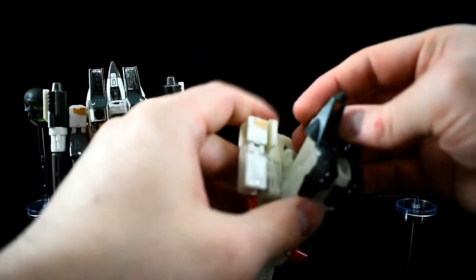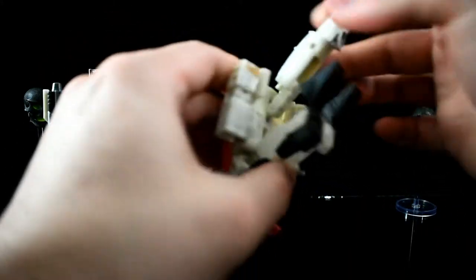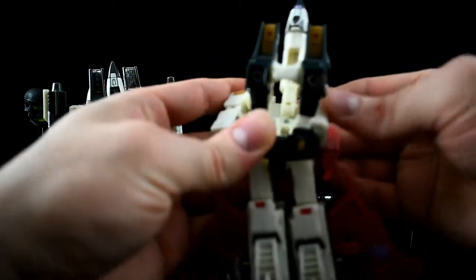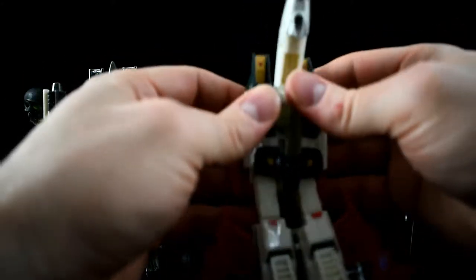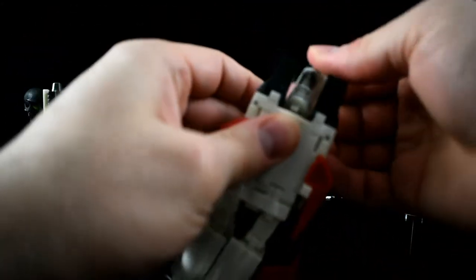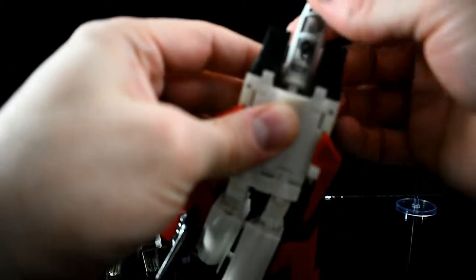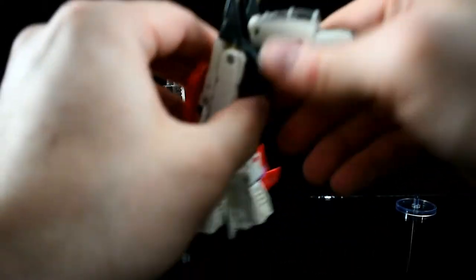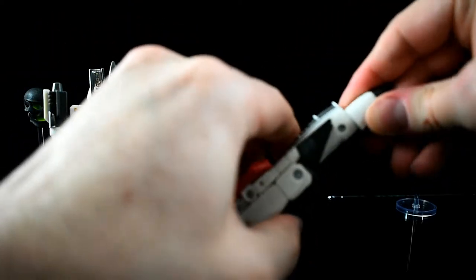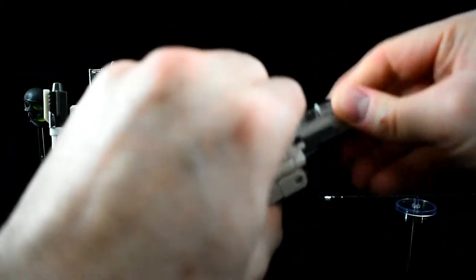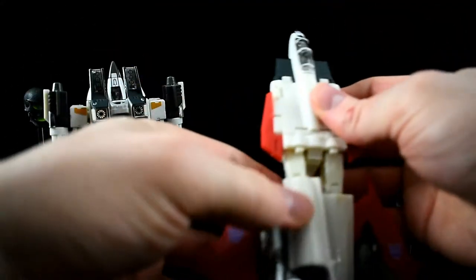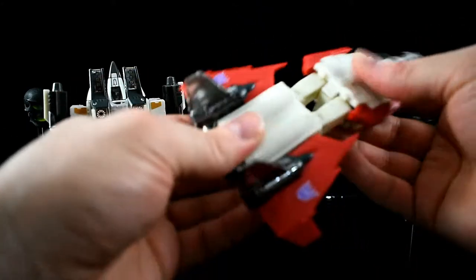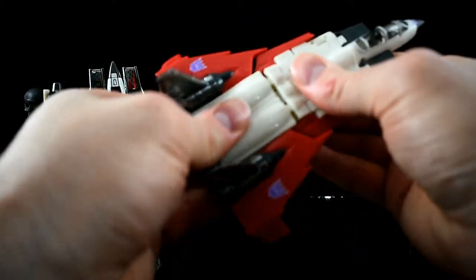I like how the cockpit folds in on itself and swivels around to store inside of the chest there, rather than doing the push through the back like the G1 toy does, or the early Masterpiece. Probably should have done this off camera because I don't usually demonstrate transformations. How about other people do that? But this is such an easy figure to transform that, there, boom, done.